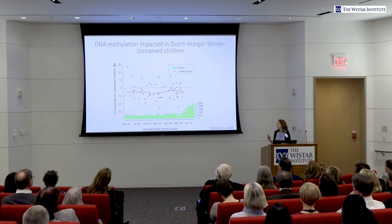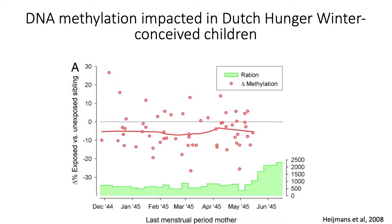What has emerged from this, remarkably, is that the children who were exposed to the famine in utero — meaning they were conceived during this Dutch Hunger Winter period or just prior to it — had greater rates of developing obesity, diabetes, or cardiovascular disease as adults. And some of these effects actually carried over to their children as well. We do think this has something to do with DNA methylation. This analysis compares an exposed sibling who was conceived during the Dutch Hunger Winter versus an unexposed sibling conceived during a time of normal nutrient availability, and the exposed sibling has lower rates of DNA methylation overall.